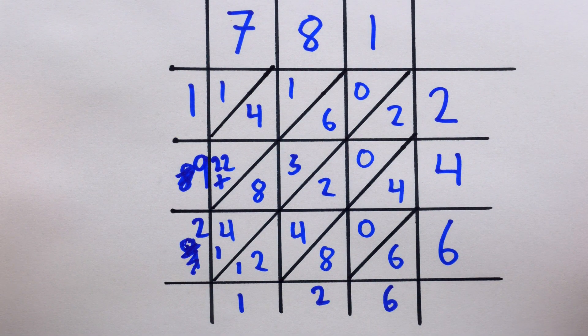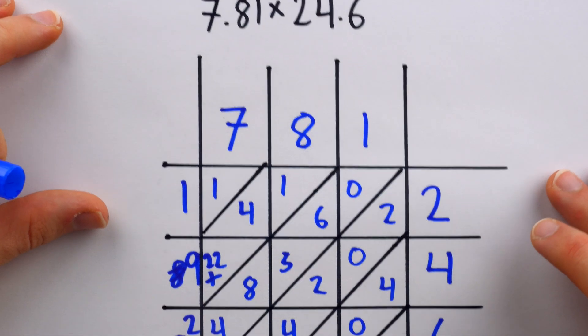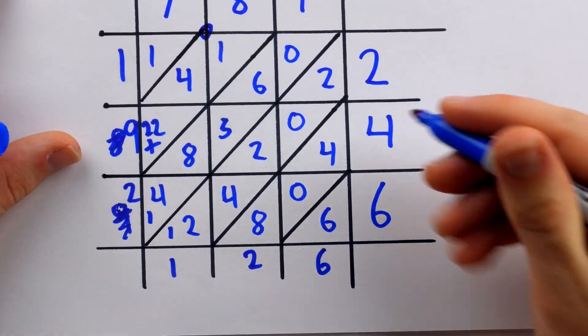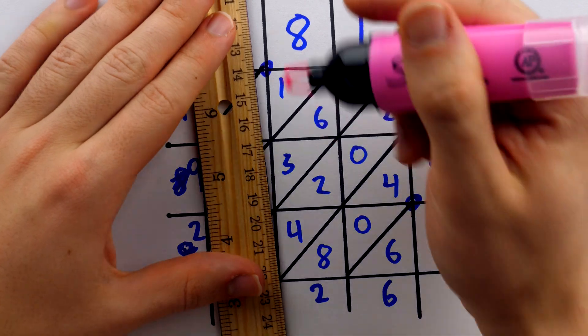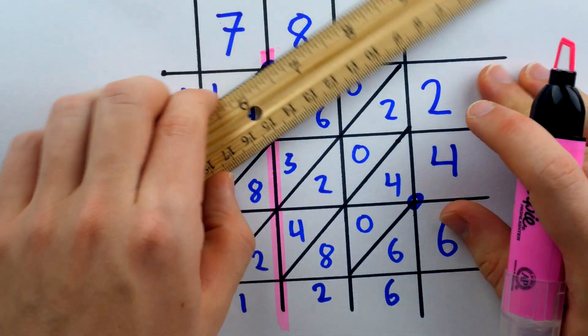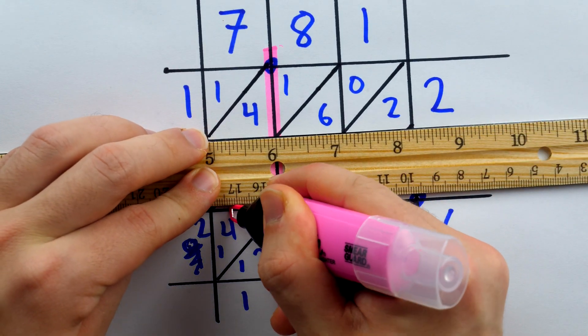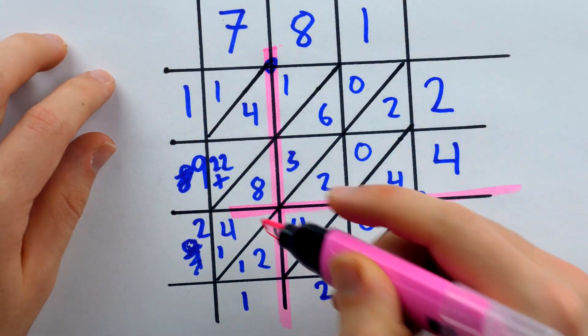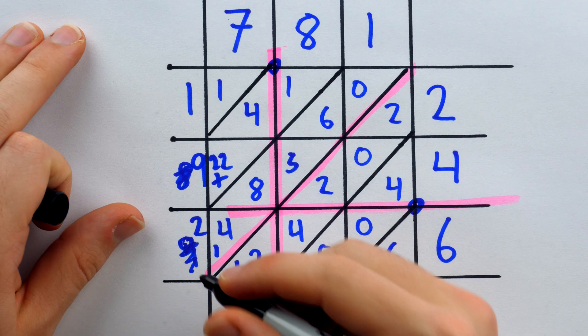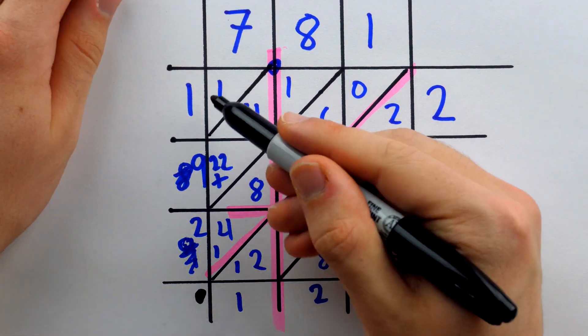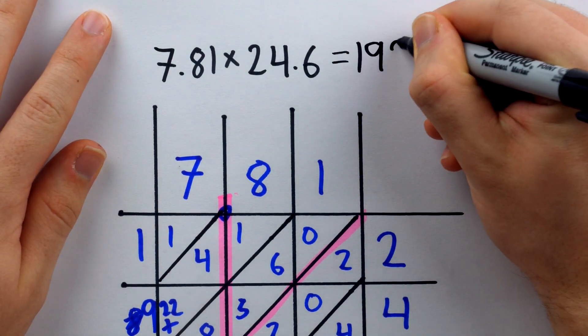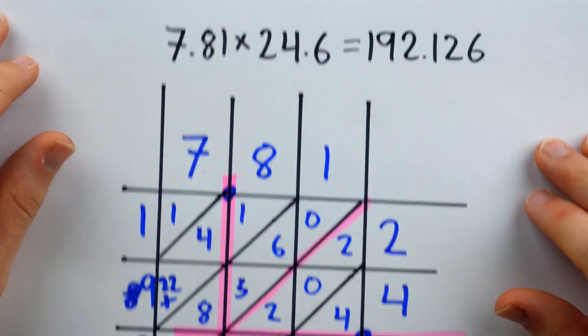Now where does the decimal point go? Well, in our original numbers, the decimal point in 7, 8, 1 was right here, 7.81, and for 24.6, it was right here. Then we need only look at the grid lines where these decimal points intersect. There's that first decimal point, and there's the second one, and we see that they intersect right here, which is right on this diagonal. That tells us that, in fact, the decimal point goes right there. So the answer is 192.126, 192.126. So that's pretty slick.